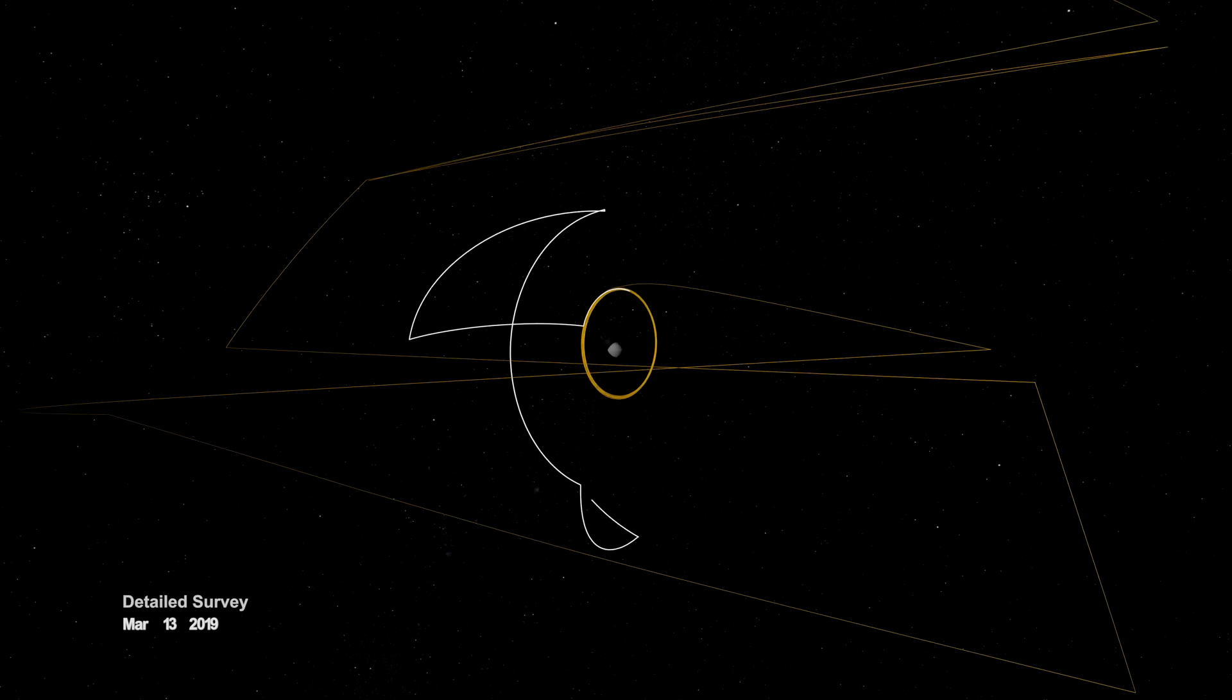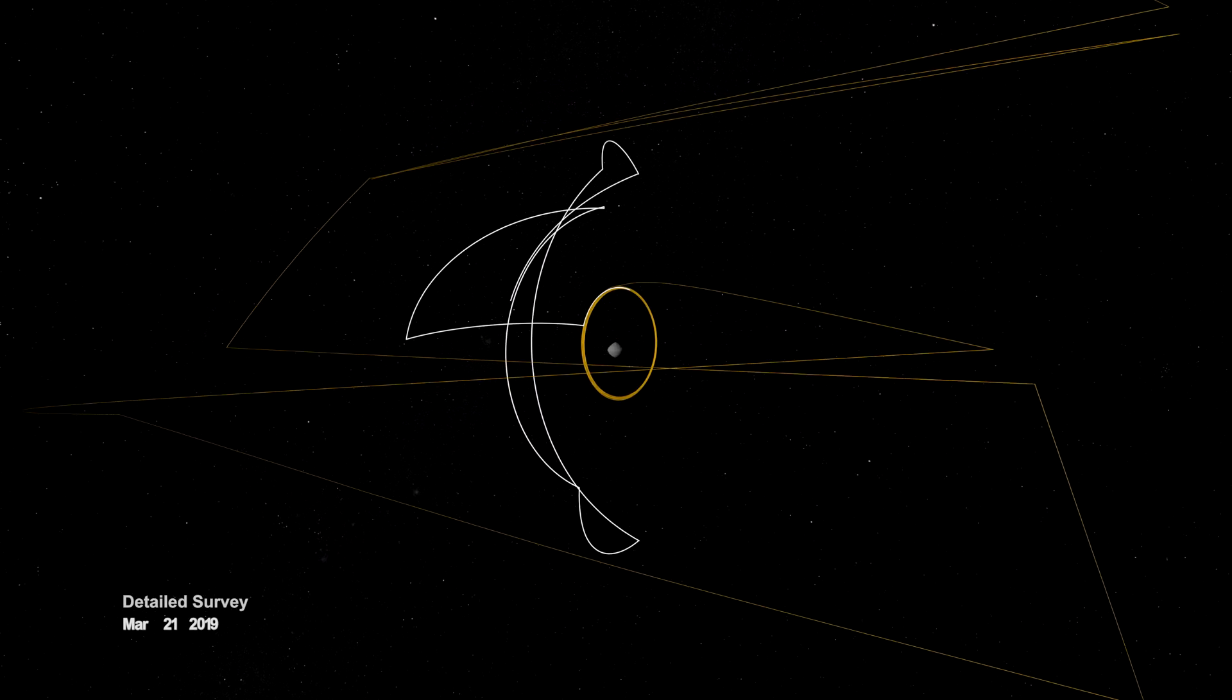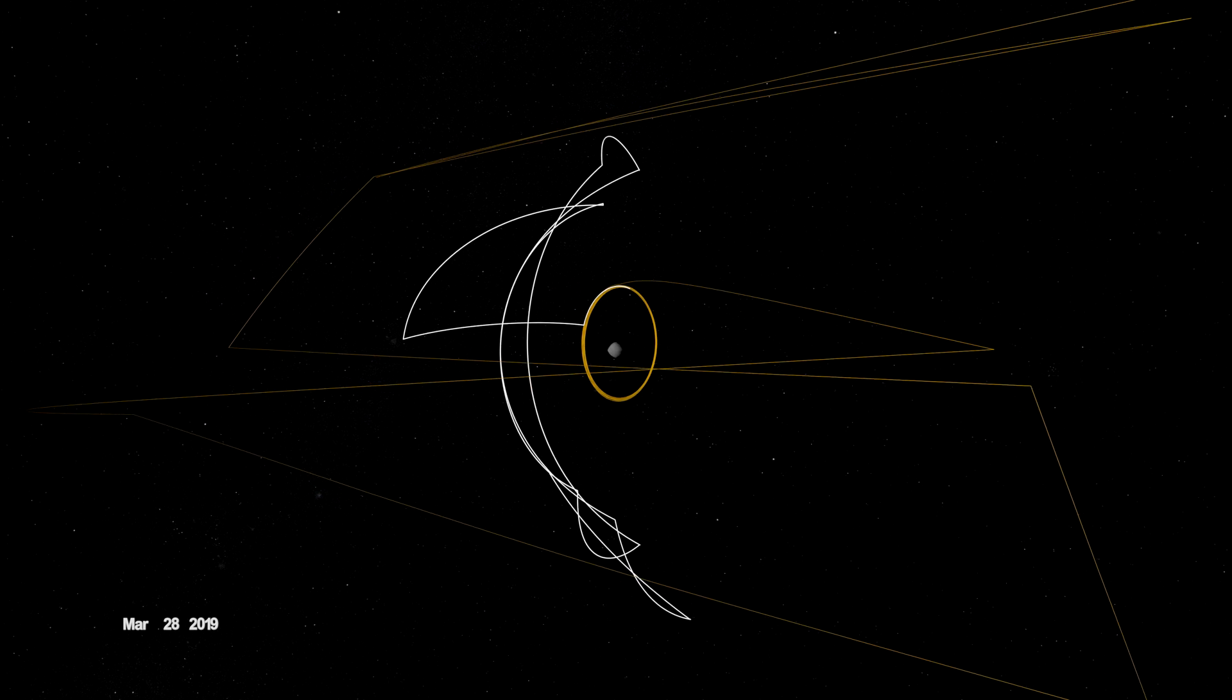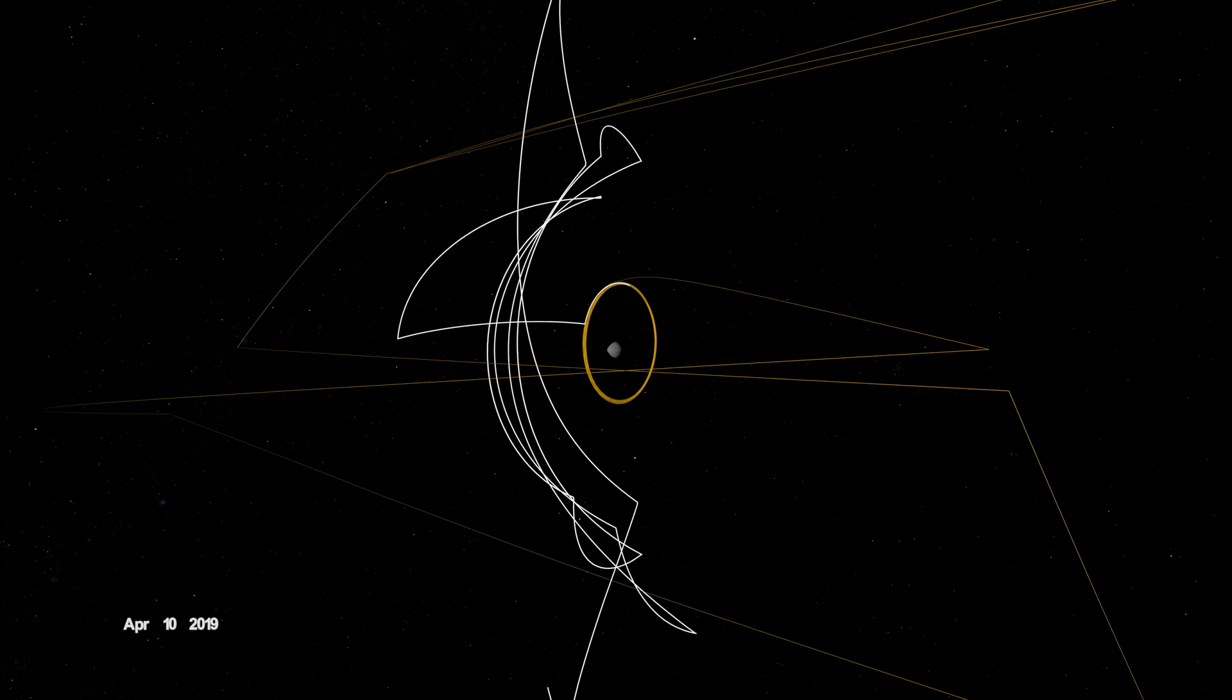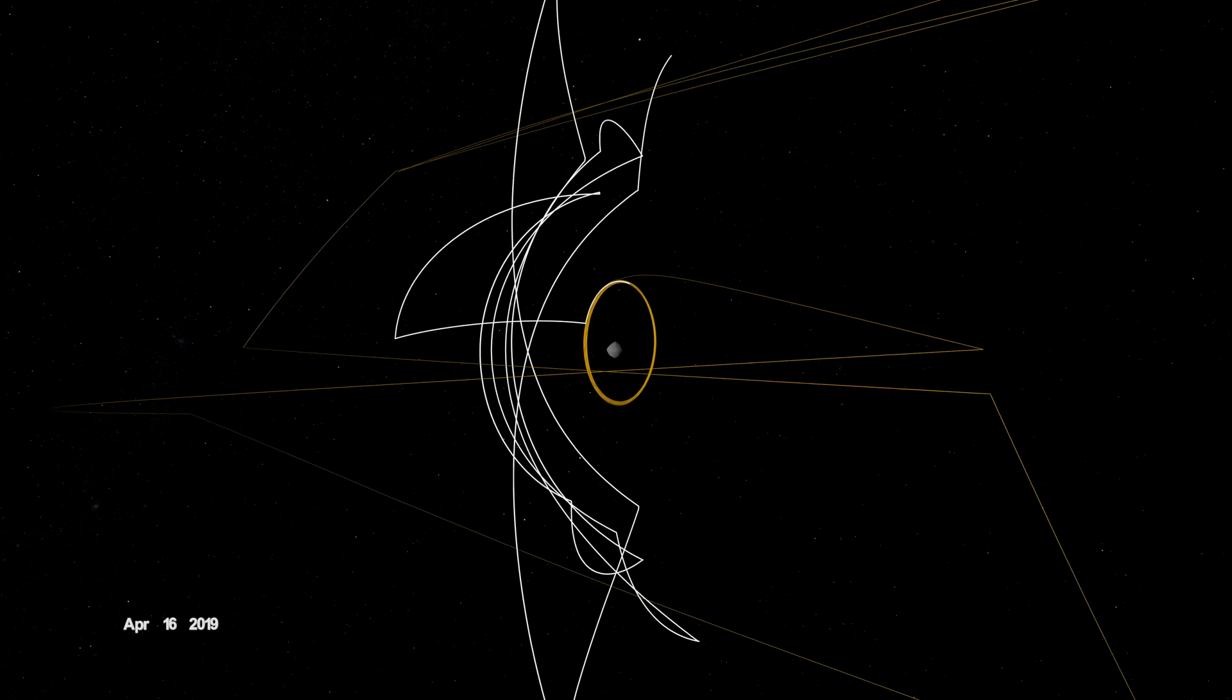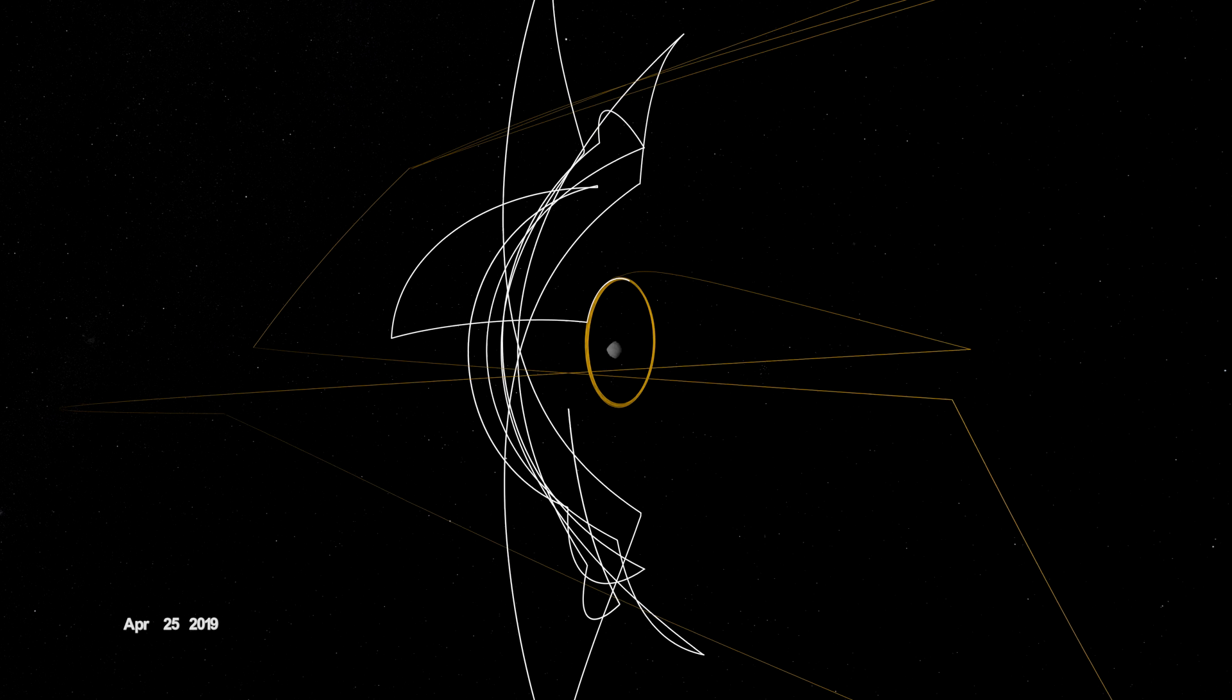In early 2019, it broke orbit to conduct a detailed survey. A series of sweeping passes allowed OSIRIS-REx to study geological features at different latitudes and times of day, enabling stereo imaging and landmark-based navigation.